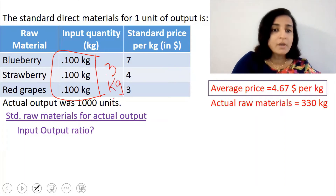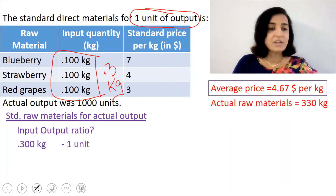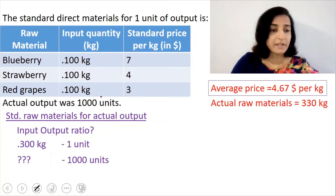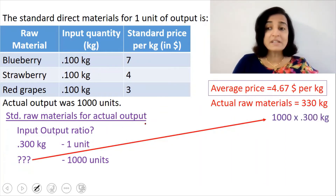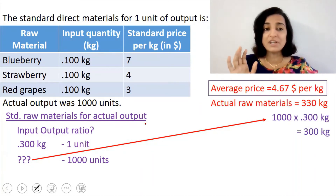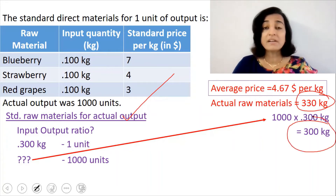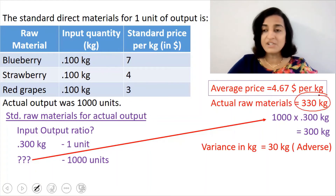It is given in the question: if you input 0.3 kg of raw material, you will get one unit of output. So for 1,000 units of output, we need 1,000 into 0.3 kg, which is 300 kg. That is the standard raw materials required. The actual raw materials consumed were 330 kg, but the standard specifies only 300 kg, meaning we consumed 30 kg extra compared to the standard. So that's an adverse variance.